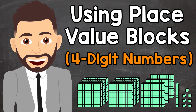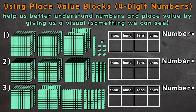Welcome to Math with Mr. J. In this video, I'm going to cover how to use place value blocks to represent four-digit numbers, so we're going to be going to the thousands place. Place value blocks help us better understand numbers and place value by giving us a visual, so something we can see. We're going to go through three examples together here in order to get this down.